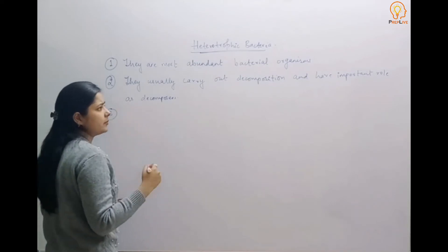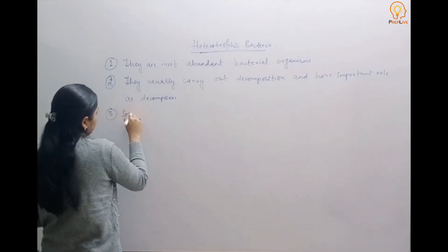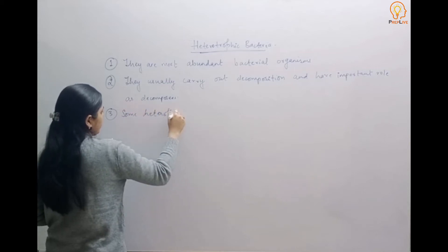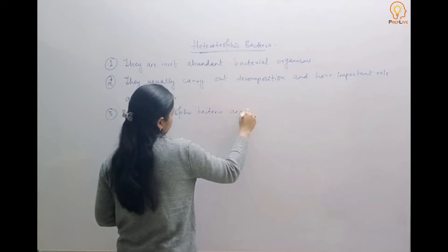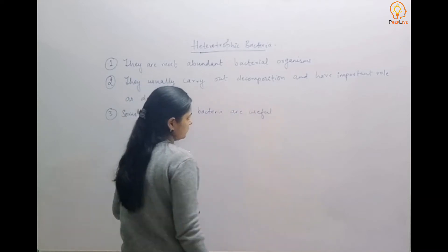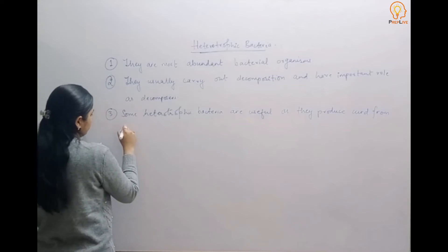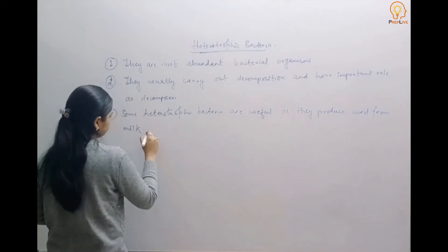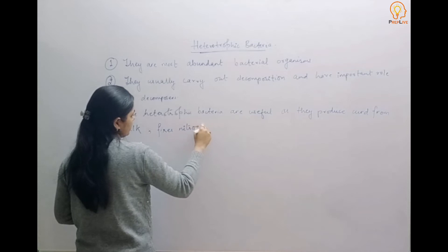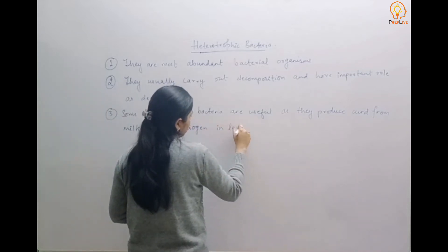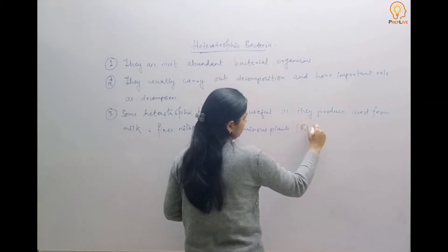There are advantages and disadvantages of heterotrophic bacteria. Some heterotrophic bacteria are useful, as they produce curd from milk — these are lactobacillus bacteria. They also fix nitrogen in leguminous plants; the example here is Rhizobium.